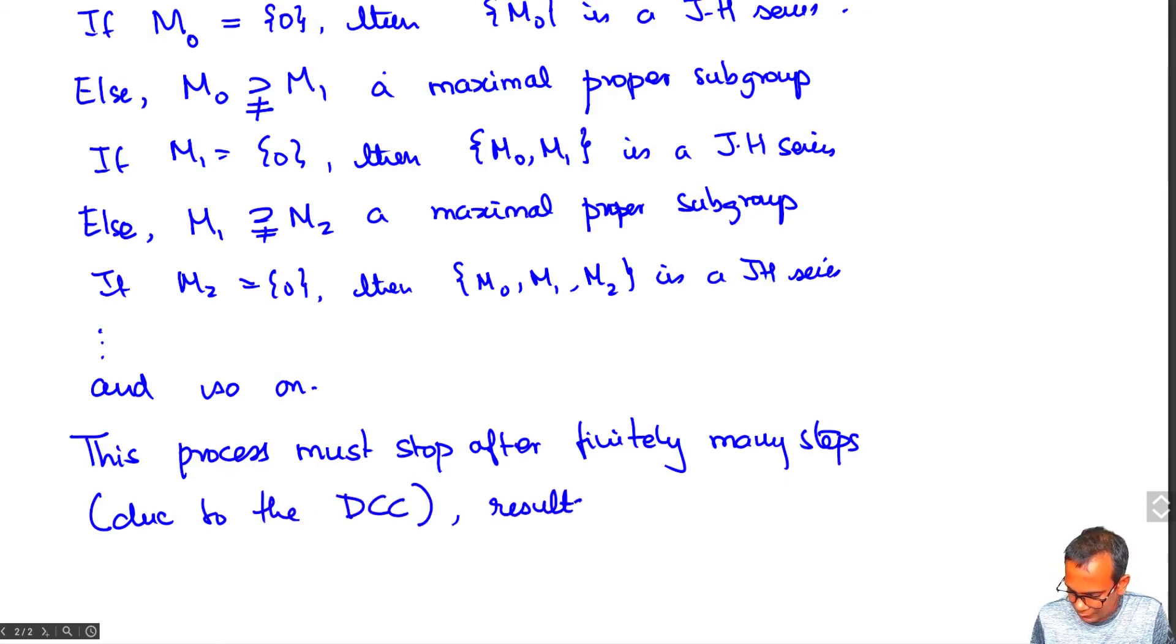And that results, when it stops, you have a Jordan-Hölder series, resulting in a Jordan-Hölder series for M.